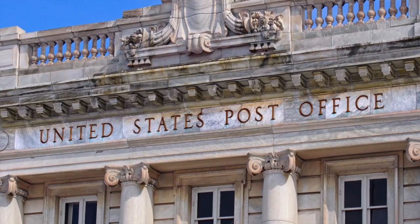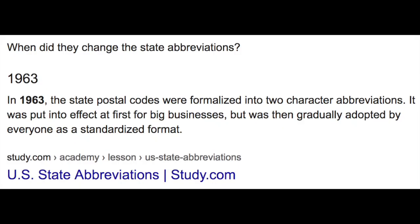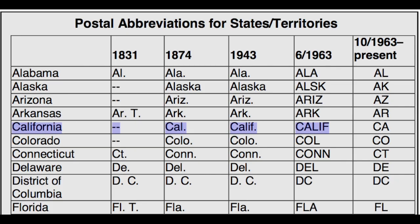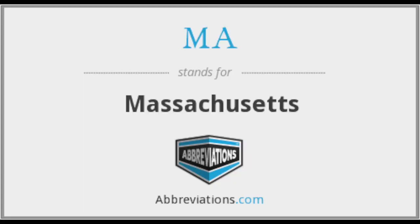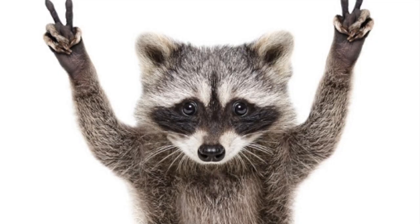Just like the United States Post Office has systems for naming states including two-letter abbreviations, they will change the system if it suits them. At one time the state abbreviation for Massachusetts was 'Mass' and for California it was 'Calif.' Now it is reduced to just CA or MA. They can do this with anything — they can do this with taxonomy. I could do it with a raccoon and show similarities between us and them.